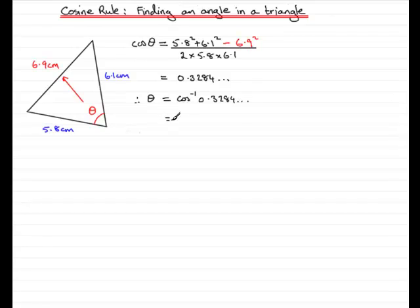If we inverse cos that, we get 70.826 and so on. If we round that up to one decimal place, we get that theta equals 70.8 degrees. Don't forget to put that accuracy that you use in brackets there, one decimal place.